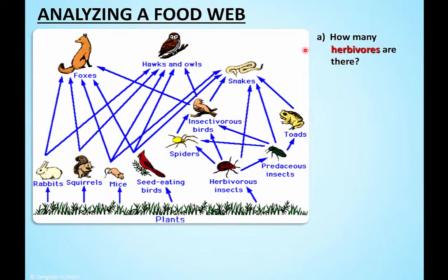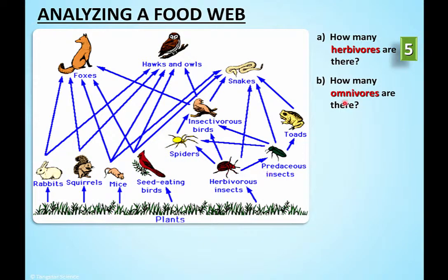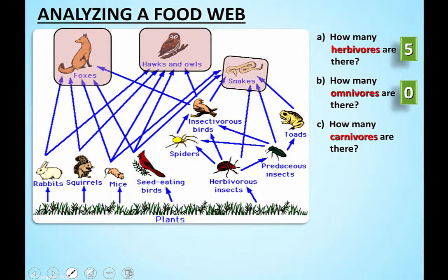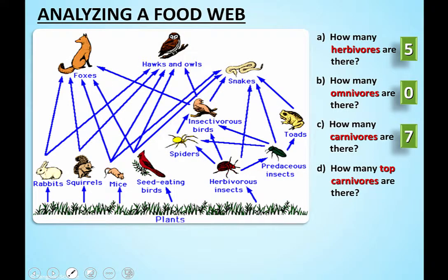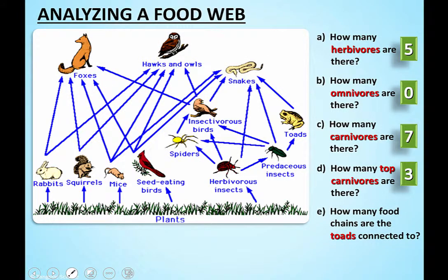First we'll use simple terms. Herbivores are the plant eaters - you can see them clearly, all of these eat plants. Omnivores eat plants and animals - there are none in this food web. Carnivores eat animals, and insects count as animals here, so anything that eats an insect or animal is a carnivore. Top carnivores are easy to find - nothing eats them, so there are three.